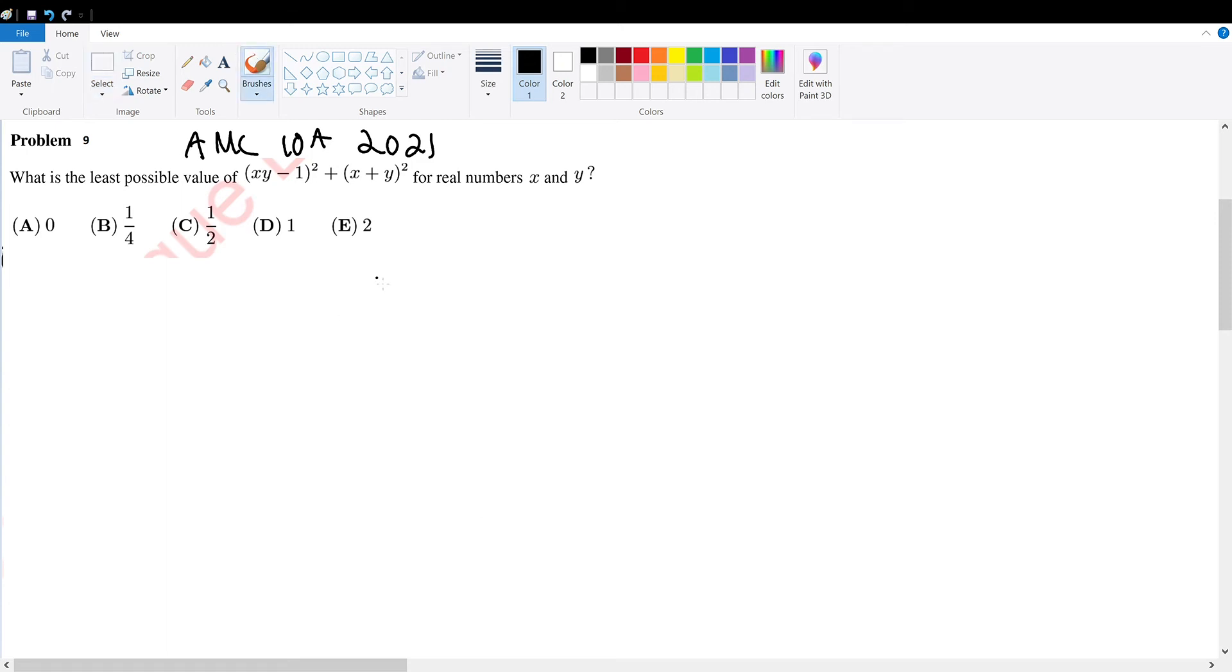AMC 10, 2021, problem 9. What is the least possible value of the following expression for real numbers x and y?